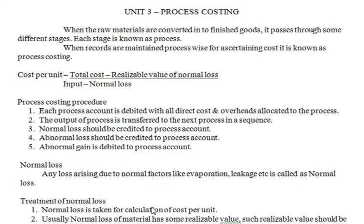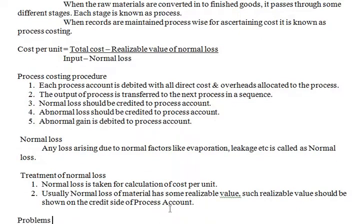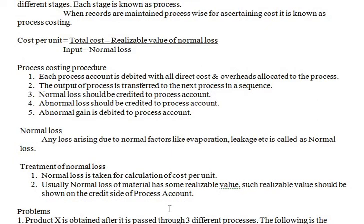Normal loss is any loss arising due to normal factors like evaporation or leakage. There are two treatments for normal loss: first, normal loss is taken into the calculation of cost per unit; second, normal loss of material usually has some realizable value, and that realizable value should be shown on the credit side of the process account.